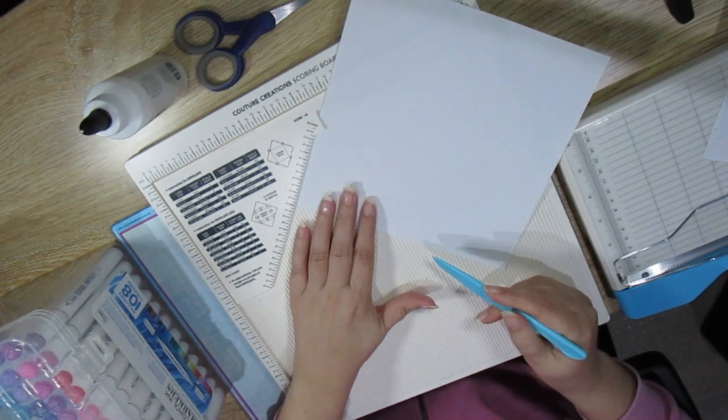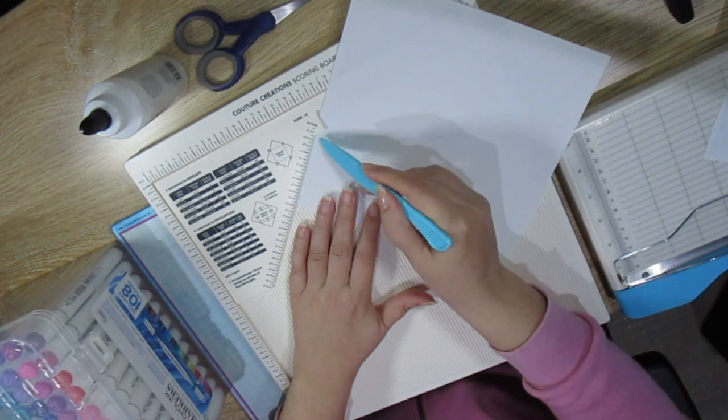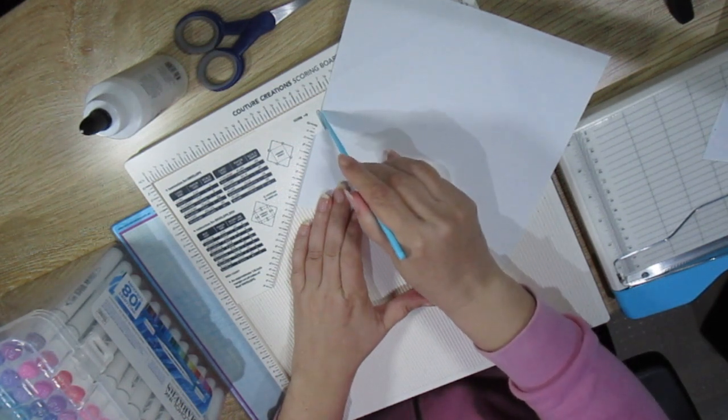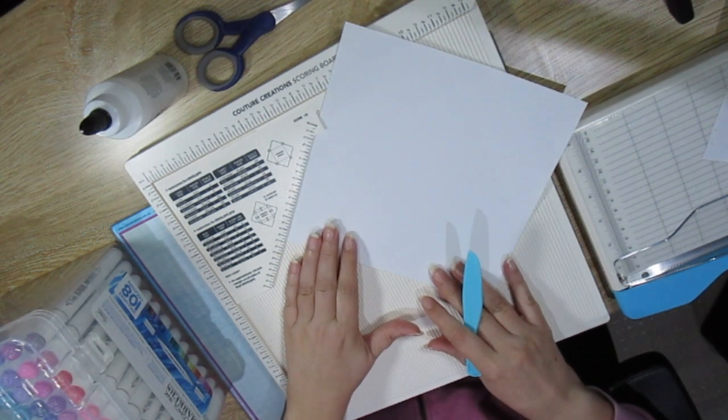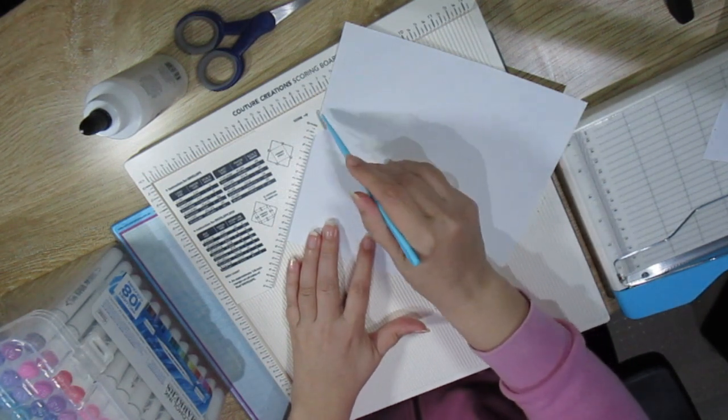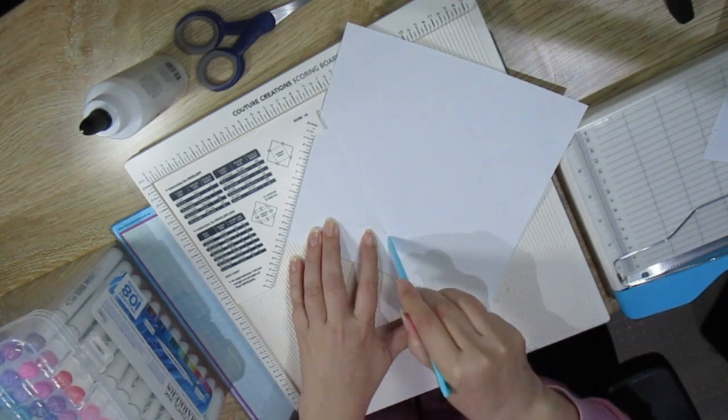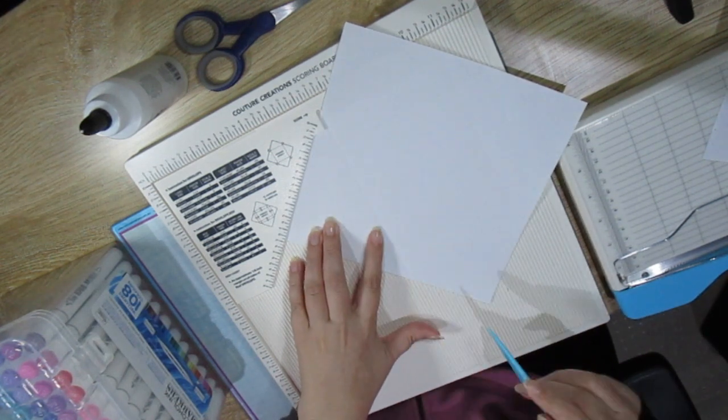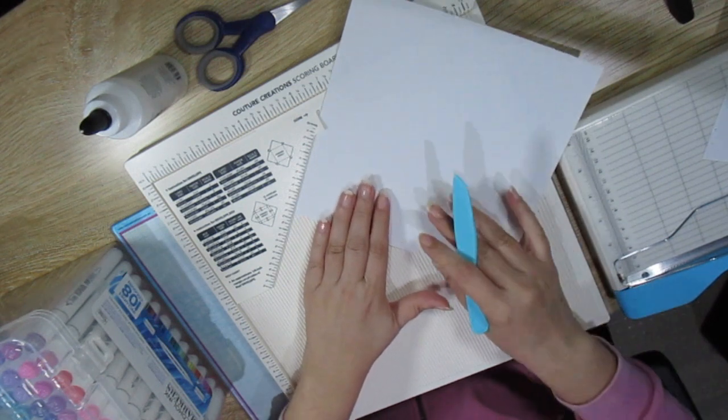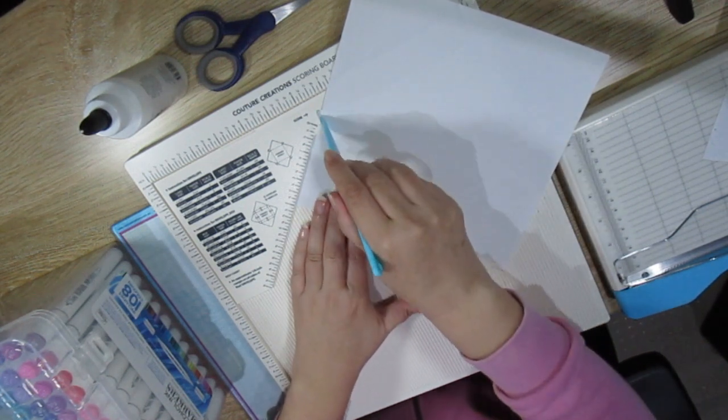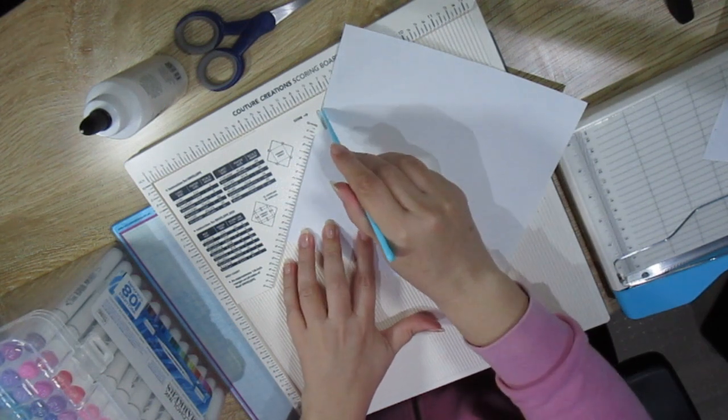We'll start with the 3 inches. I'm moving the cardstock up to the 3 inch measurement and scoring it. I'm moving the cardstock to 4 and a half and scoring it. Now I'm turning it at 3 inches. I'm moving the cardstock to 4 and a half and I'm scoring it.